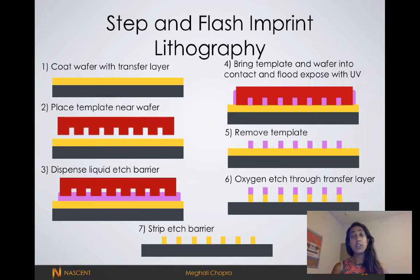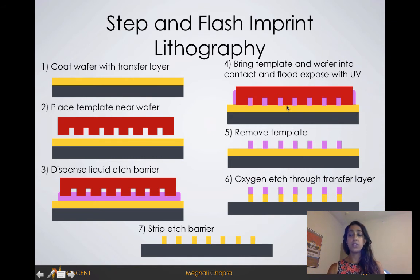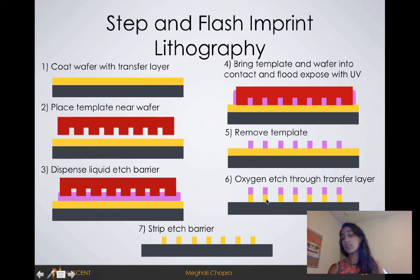In step-flash imprint lithography, you're not using light to pattern your surface, but instead using a pattern template. You first coat your wafer with a transfer layer, then place the template near the wafer but not touching it, and dispense a liquid etch barrier — something that will resist the etch. You then bring your template and wafer into contact with your transfer layer and expose it with UV. This causes a reaction such that your etch barrier only has your desired pattern. You can then oxygen etch through this etch barrier — the pattern is only transferred in areas where the etch barrier is not — and then you strip the etch barrier, leaving only your desired pattern.